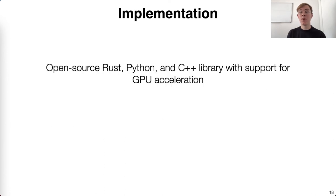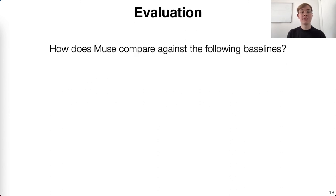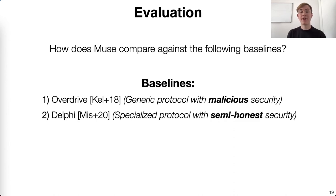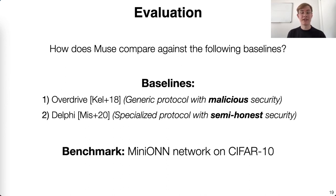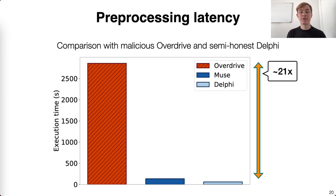We implemented and open sourced both our attack and the Muse protocol. We evaluated the Muse protocol comparing it to two baselines. The first baseline is OverDrive, a generic protocol with malicious security, which demonstrates how much Muse improves on existing alternatives for defending against malicious clients. The second baseline is Delphi, the semi-honest protocol, which demonstrates the concrete cost of boosting from semi-honest to client malicious security. Our benchmark is the eight-layer CNN from Mini-ONN on the CIFAR-10 dataset. For the latency of the preprocessing phase, Muse is an impressive 21 times faster than OverDrive and only 2.2 times slower than Delphi.